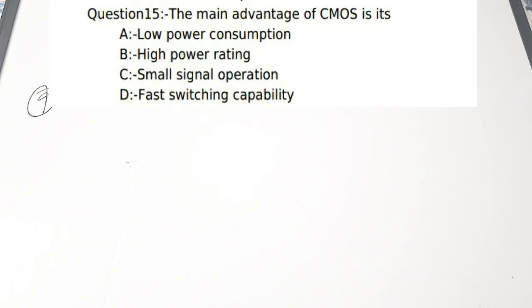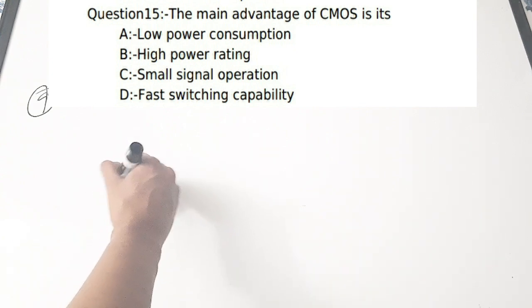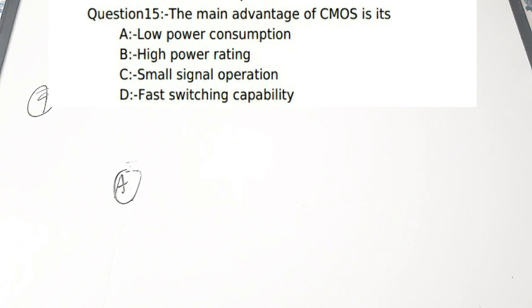The ninth question: the main advantage of CMOS is — (a) low power consumption, (b) high power rating, (c) small signal operation, (d) fast switching capability. Correct answer is option A — CMOS circuits have very low power consumption. This is a very important question seen in multiple examination papers. Complementary circuits are low power consuming, which is the main advantage of CMOS.